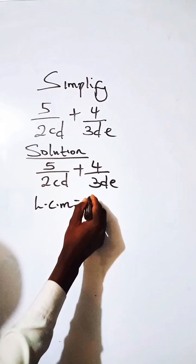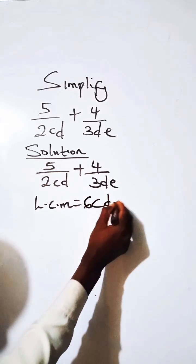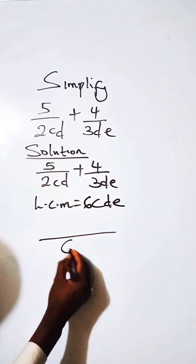For 2CD and 3DE, the LCM is 6CDE. So let's have it this way.